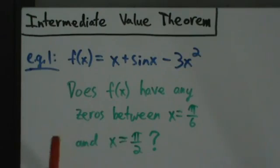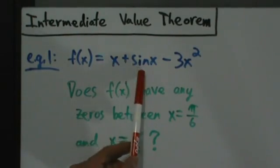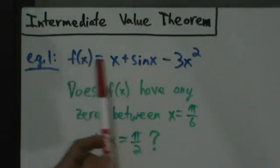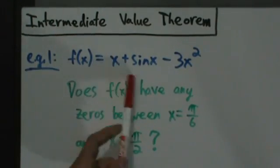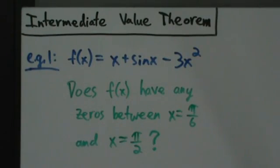We just need to verify is this function continuous around these values. Yeah, x, sine of x, and 3x² are continuous everywhere. So if you add or subtract them, you still have a continuous function. This function is continuous everywhere, so we don't have to worry about anything.